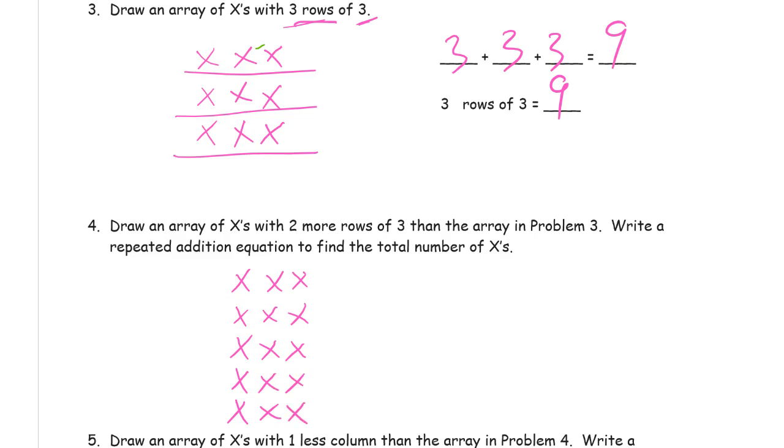Write a repeated addition equation to find the total number of X's. So now I just have more threes, right? I have two more rows. So I have two more threes. So first I had three threes. And then I need two more. And that's 15.